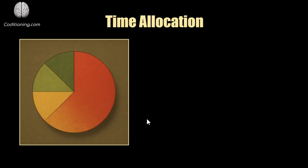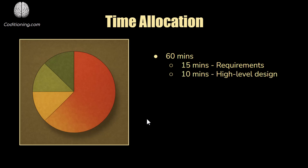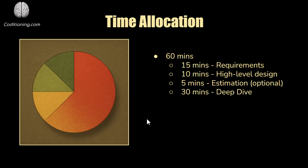Time allocation is important. You should go into the interview knowing, firstly, how much time you actually have for the system design. If your interview time slot is an hour, that doesn't necessarily mean you have an hour for the design. It's always good to check with a recruiter beforehand if possible, or at the start of the interview ask how much time you actually have for the design, because some of that interview might be allocated for asking questions. For example, if you had a 60-minute interview, you should have a rough time box for each phase — something like 15 minutes for requirements gathering, 10 minutes for high-level design, 5 minutes for estimation if relevant, and 30 minutes for the deep dive because you really want to spend the time there. This is where you really earn your marks.